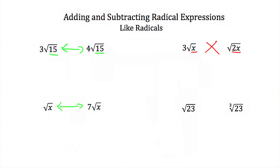Next we have the square root of 23 and the cube root of 23. These have the same radicand — what's underneath the radical symbol is the same. But this one is a square root and this one is a cube root. Since the root powers are different, these are not like radicals.